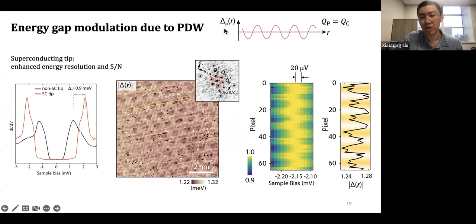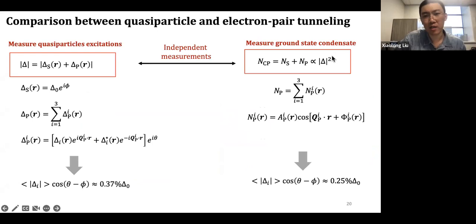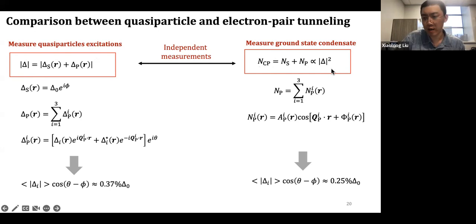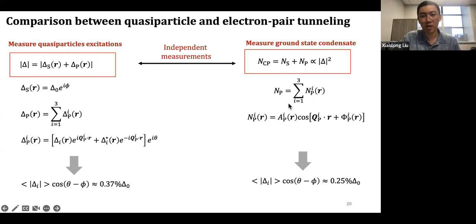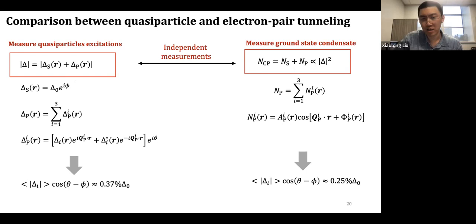Now we have two independent measurements. We can do better quantitatively: one is measuring the quasiparticle gap — from energies away from zero — and the other is measuring the condensate directly by measuring the superfluid density via the Josephson tunneling current. Because the total superfluid density is proportional to the square of the energy gap, we can establish a correlation. From each side we can derive how much the PDW energy gap modulation is compared to the uniform superconductivity gap. From both independent measurements we get two numbers that are very similar — at least on the same order — giving us confidence that our measurements are consistent.